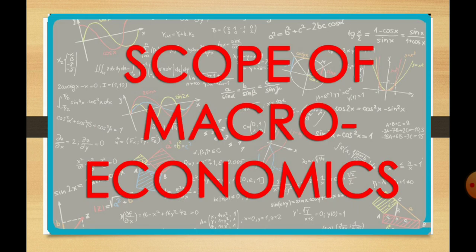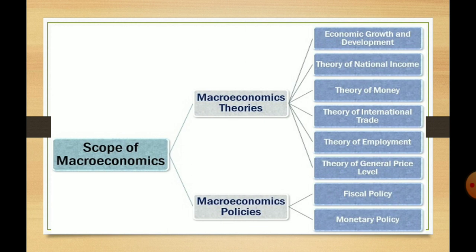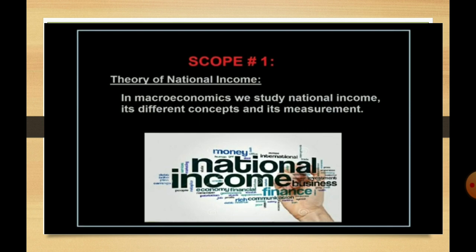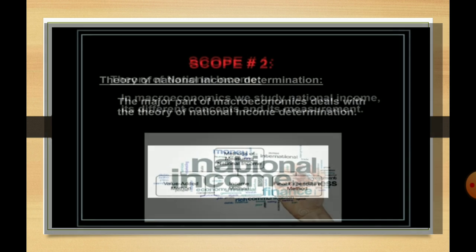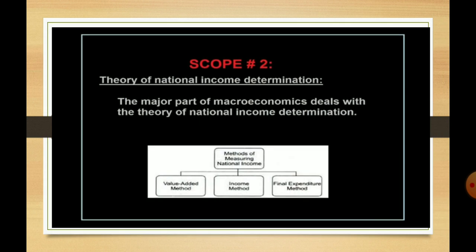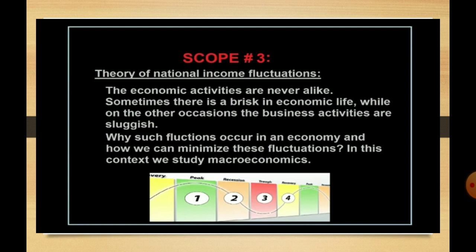The next topic is the scope of macroeconomics. Here we are going to discuss the theories and policies that are part of macroeconomics. First, the theory of national income — it is related to national income and its aggregates: domestic territory, factor income, market price, net factor income from abroad, etc. Next is the theory of national income and its determinants, where we learn the three methods of calculating national income: the value added method, income method, and final expenditure method. After this, the theory of national income and fluctuation — sometimes an economy faces stagflation, depression, or inflation, so here we learn why such fluctuations occur and how to minimize them.